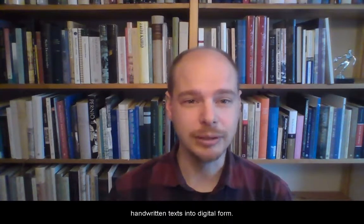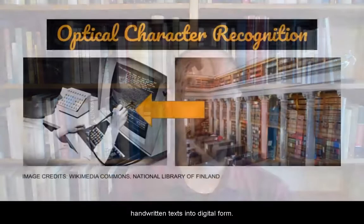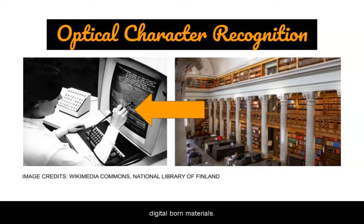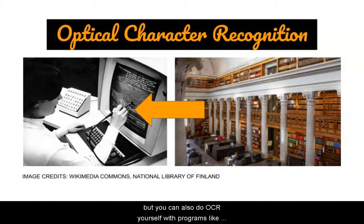OCR is the process of converting old printed or handwritten texts into digital form. It is what allows us to computationally manipulate historical records in the same way we work with modern digital born materials. OCR is most often done by libraries, museums or private companies, but you can also do OCR yourself with programs like Transkribus or by doing conversions in Google Drive.